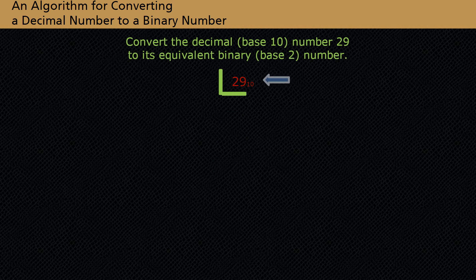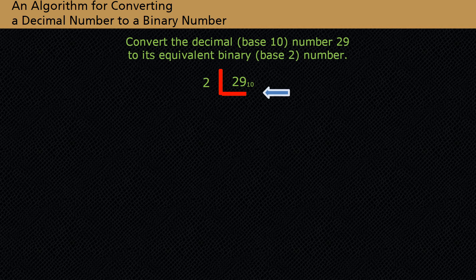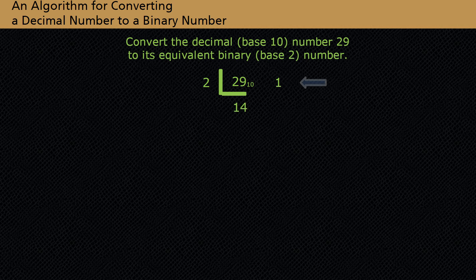Start with the given decimal number. Divide 2 into 29. Notice the upside-down division symbol. If we divide 2 into 29, we get a quotient of 14 with a remainder of 1. Note the placement of the remainder.